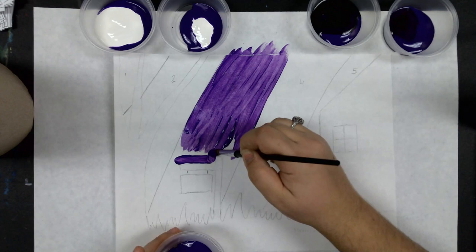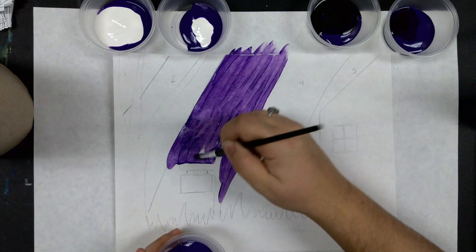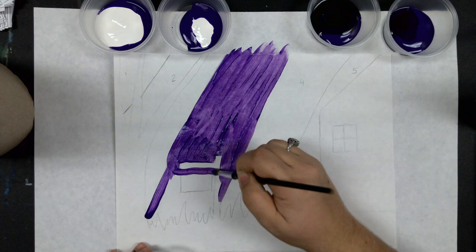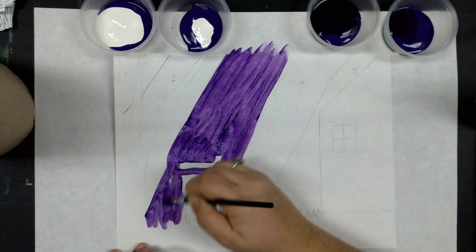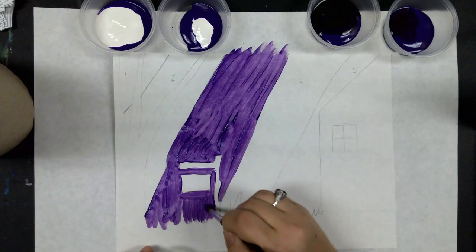It is also okay if it gets a little bit on the spots that we were going to paint black because we'll just paint that over. So as you can see, I'm going around everything. I'm careful, but I know that if I painted over anything that is supposed to be black that I can fix that later.